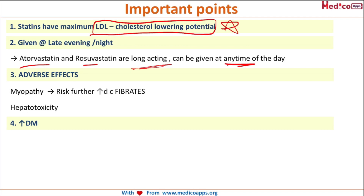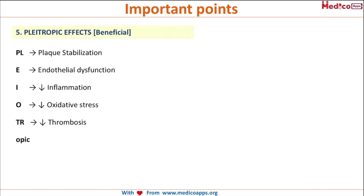The adverse effects of statins include myopathy — the risk is greater when combining with fibrates compared to statins alone — as well as hepatotoxicity and an increase in diabetes mellitus risk. The pleiotropic (beneficial) effects of statins include plaque stabilization, improvement of endothelial dysfunction, reduction of inflammation, reduction of oxidative stress, and reduction of thrombosis.